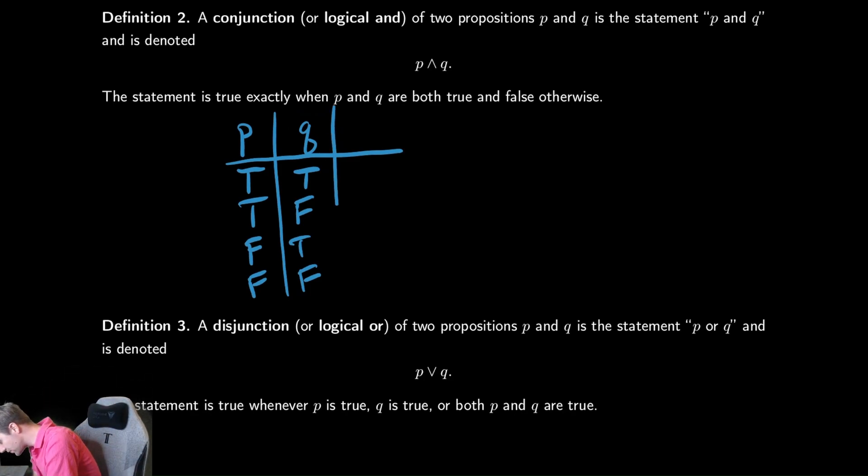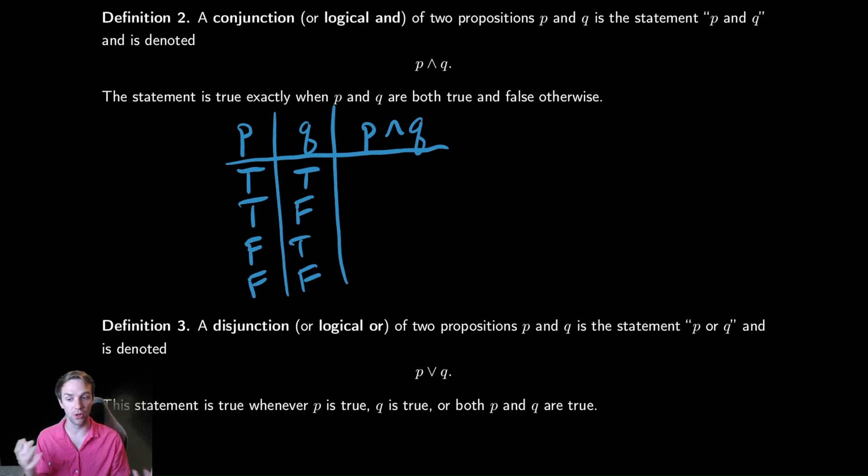So we draw a column for each of those. And then we write a column for the compound proposition. This is what we call it when we combine two atomic propositions. We call it a compound proposition. And we just say what is true. P and Q, if we read the janky English that's been up there that I've ignored reading, it says it is true exactly when P and Q are both true and false otherwise. So it's true when they are both true. And it is false otherwise.